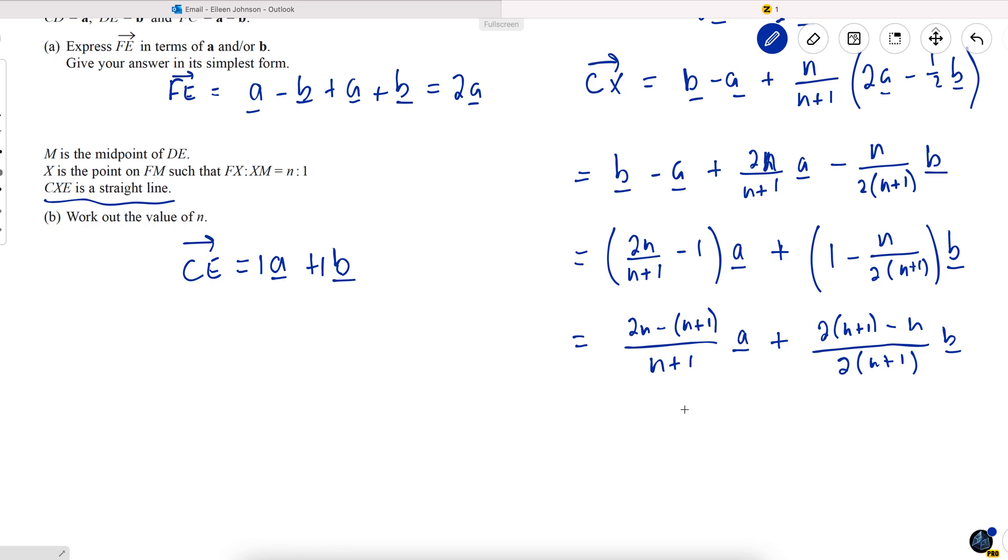And now I can equate the coefficients. Remember that as these vectors are going in the same direction, CE and CX, if these components are equal to each other, so will these be. So, first of all, I'll simplify and make them equal to each other. So, 2N minus N, so N minus 1 over N plus 1 will be equal to N plus 2 over 2N plus 1.